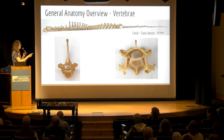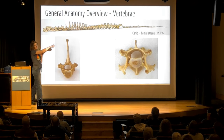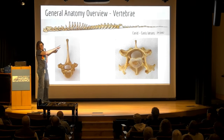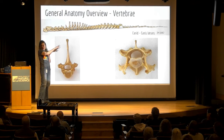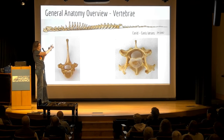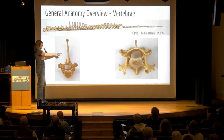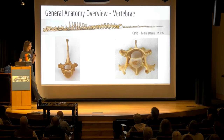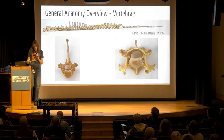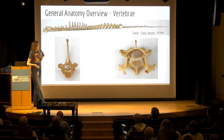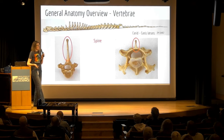This is the full vertebral column of a coyote — obviously not how it would look in life, but that's it tip to tail. These are a couple of examples of individual vertebrae, which I'll use to talk about some of the important structures, the first of which is the spine or spinous process.